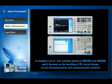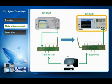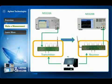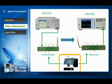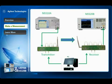Using Agilent's flexible RF education solution is convenient, time-saving, and cost-effective. This solution uses an N9310A RF signal generator, N9320B RF spectrum analyzer, a transmitter and receiver unit, and the RF training software. The RF signal generator generates an input signal to the transmitter unit, and the spectrum analyzer measures the output signal of the receiver unit.